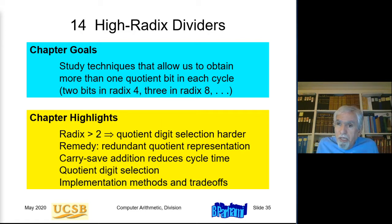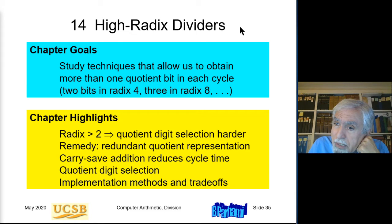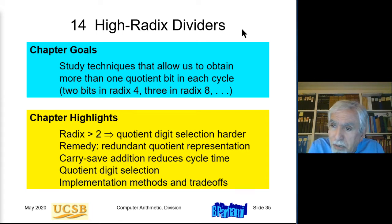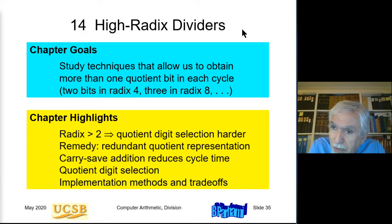The notion of high radix dividers should be familiar because we discussed high radix multipliers in which multiple bits of the multiplier are processed at once: two bits in radix 4, three bits in radix 8, and so on. There are also other high radices besides powers of 2, such as radix 10, which has recently become quite popular for implementing decimal arithmetic units including decimal dividers.